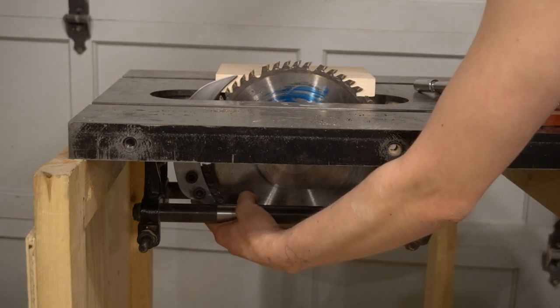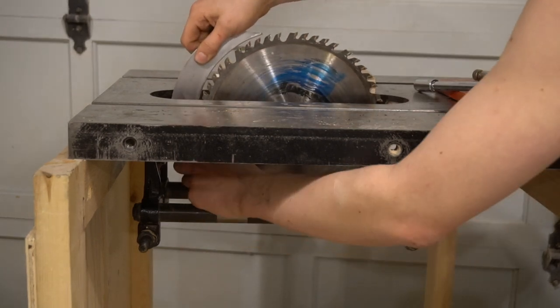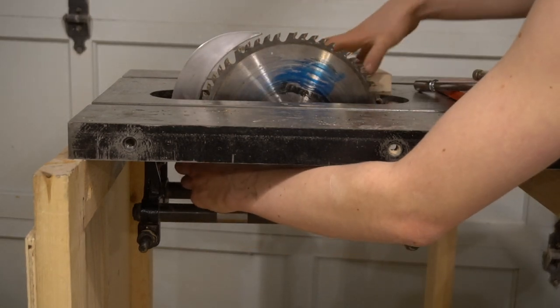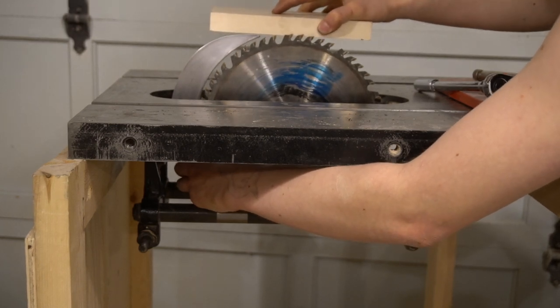So this isn't good, but there's no easy way around it because with the riving knife like this, once the blade is totally high, the riving knife right now is actually a little bit higher than the blade, but I just have to lower it by like a tiny bit and it's fine.